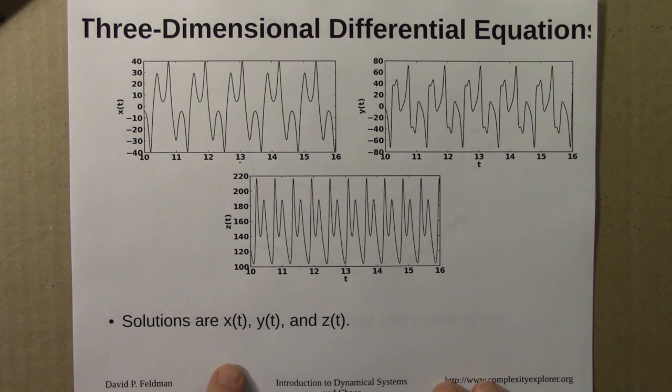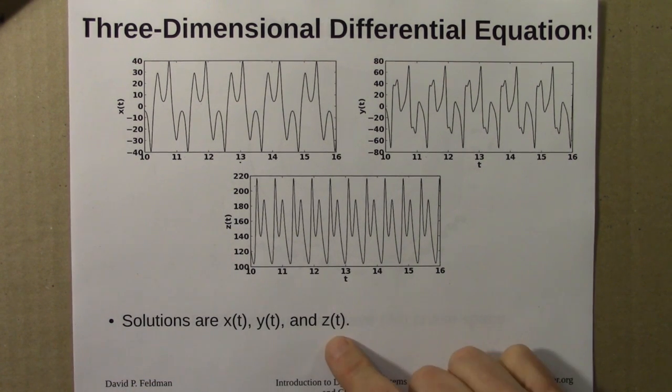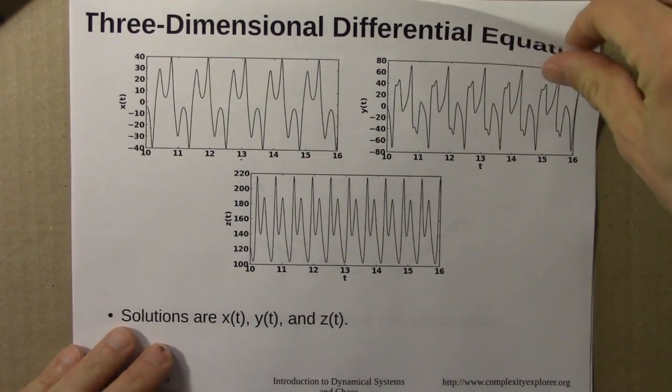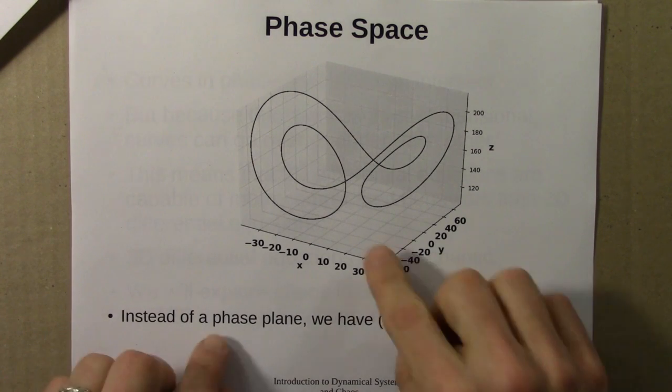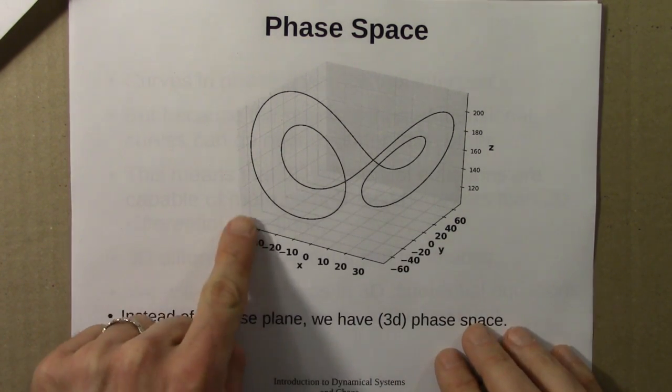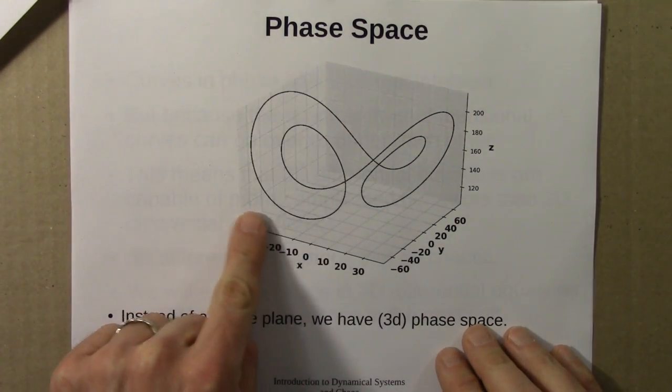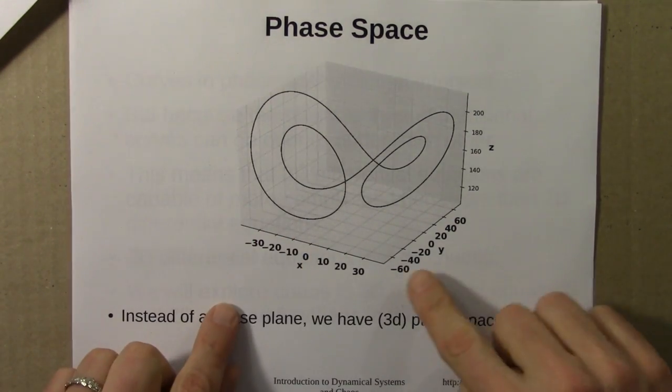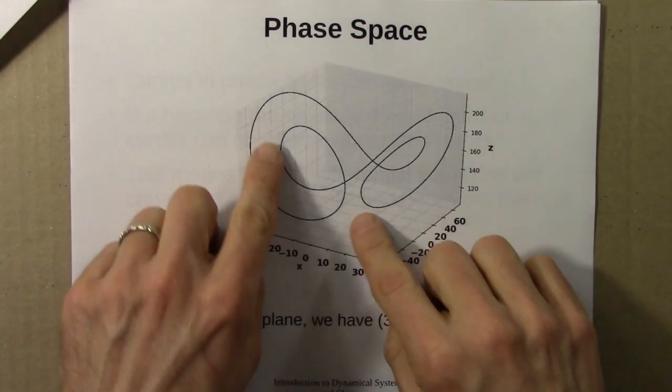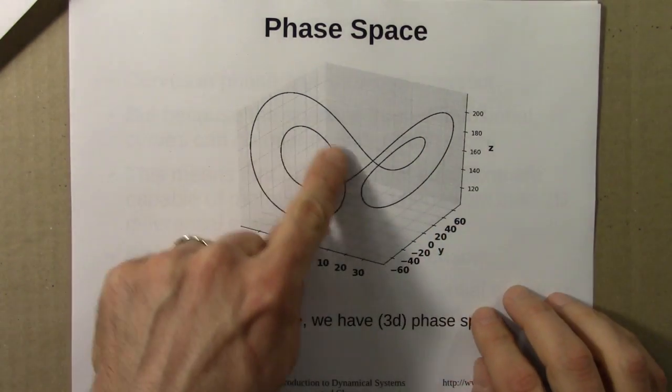Then it can be interesting and fun to plot x, y, and z against each other. This is like a phase plane, but because there's a z now, it's a phase space, it's three-dimensional. So that makes things a lot more interesting. Here's what those periodic solutions look like in phase space. It's oscillating up and down in the z direction, sideways in the x, and sideways in the y. And it makes this curly, loopy shape.